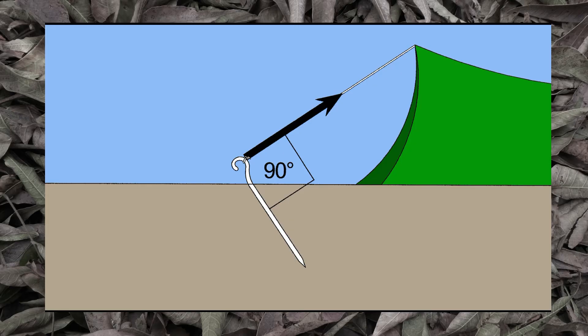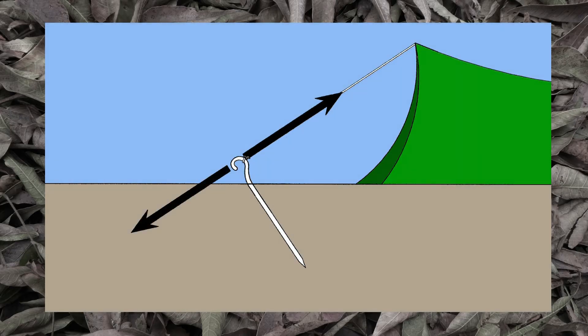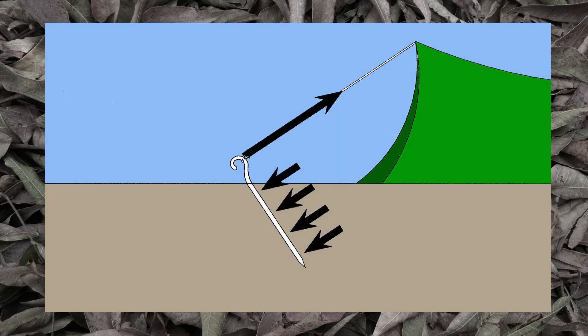But don't just take my word for it. Let's try to understand why. If a guy line is pulling on a stake and the stake isn't moving, the force exerted by the guy line is somehow being canceled by an equal force in the opposite direction. So what is canceling the pull of the guy line? As the guy line tries to pull the tent stake through the soil, the soil pushes back.